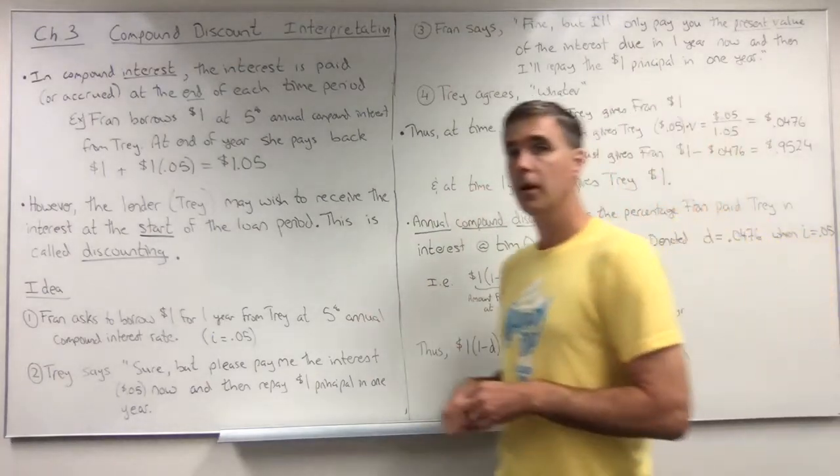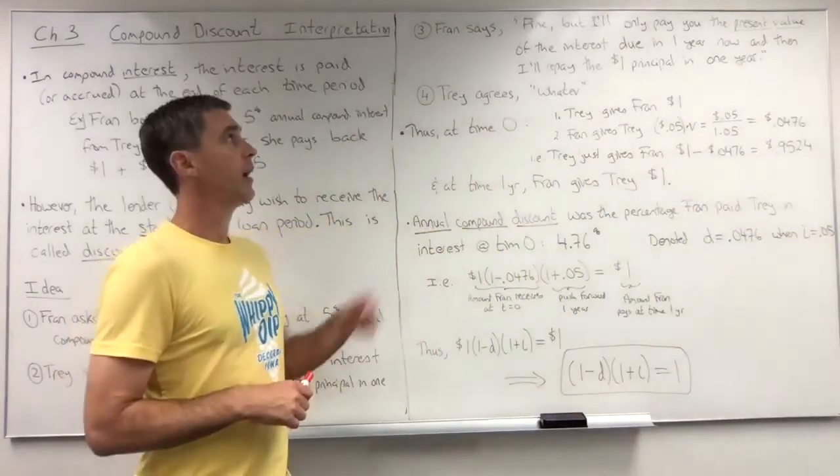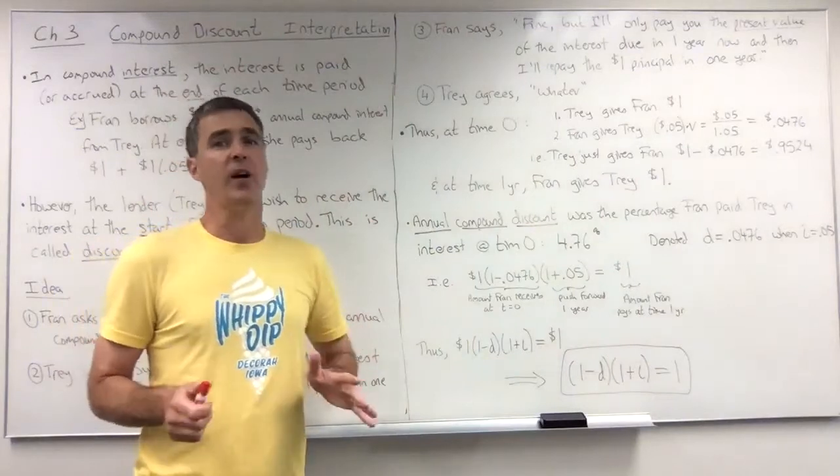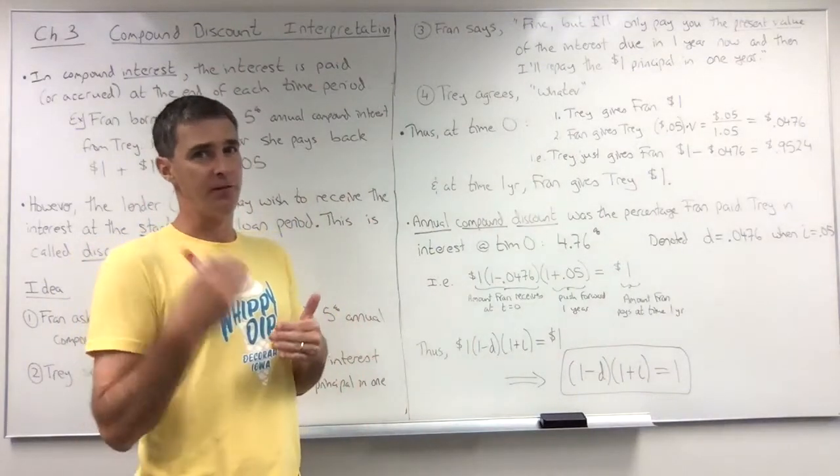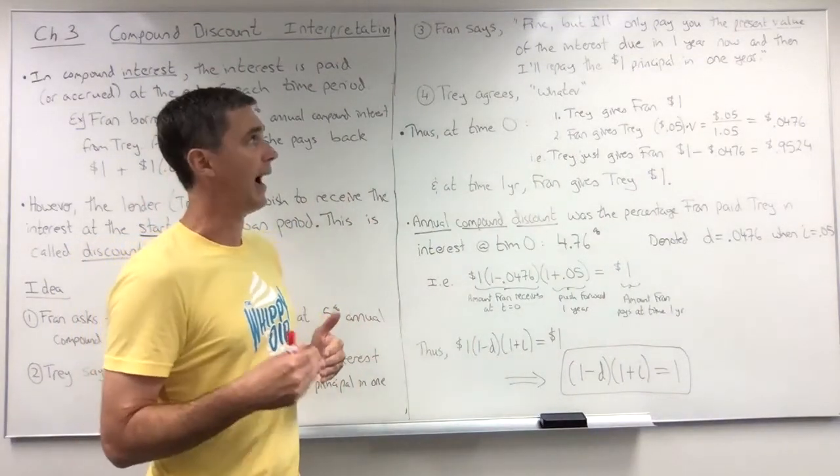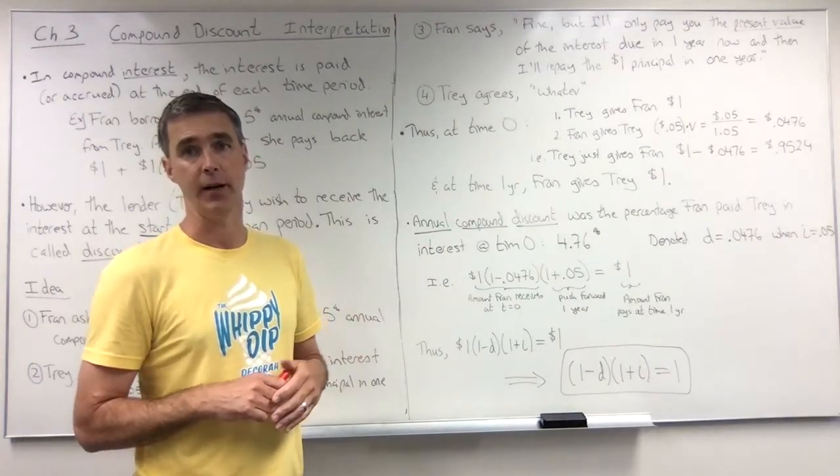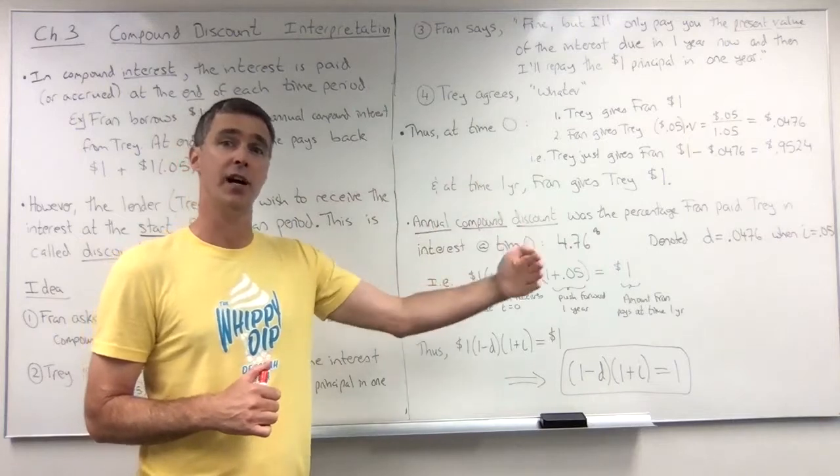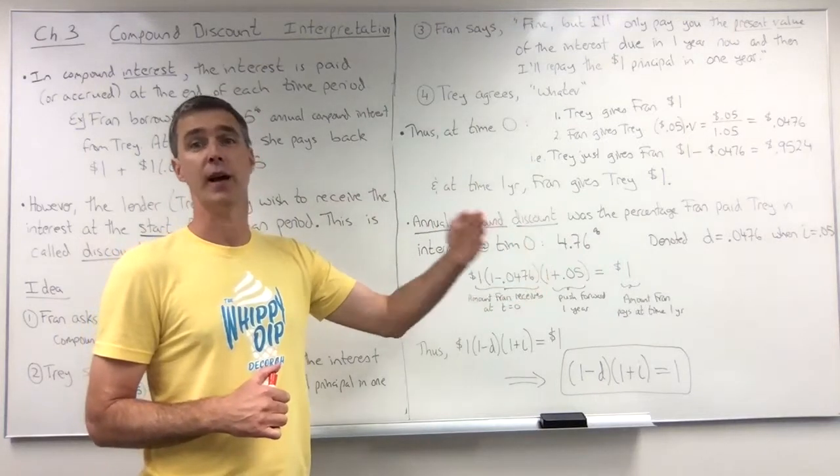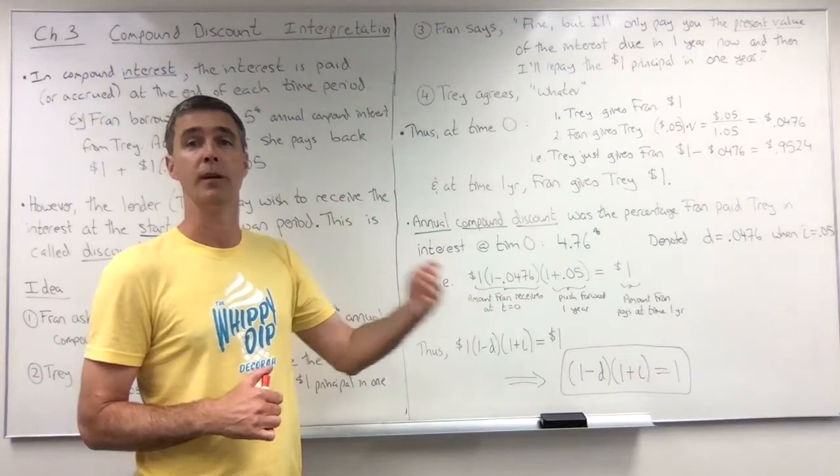Okay, Fran might say that's fine, but I'm not going to pay you the five cents worth of interest right now. I will pay you the present value of that five cents worth of interest right now, because remember that five cents is to arrive in a year's time. So if we drag that back to time zero, that's going to be the present value of the five cents.